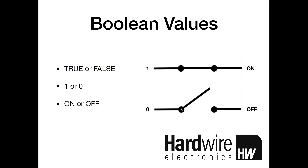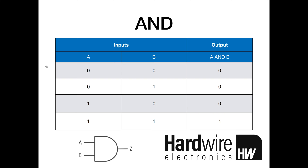In the next section on truth tables we'll draw them using one or zero, just to make the tables a bit more simple. This is what a truth table looks like — it shows us what the output will be for all the different combinations of the two inputs A and B.